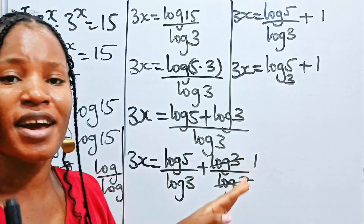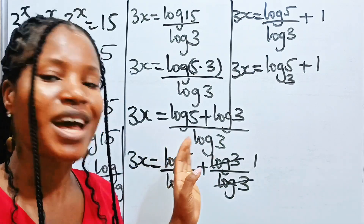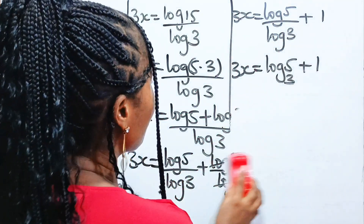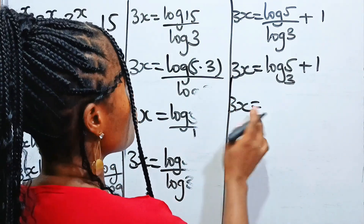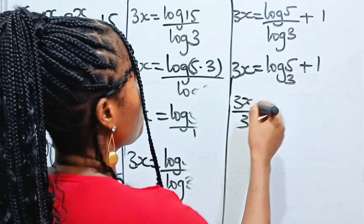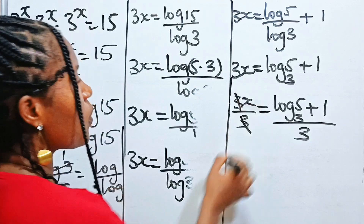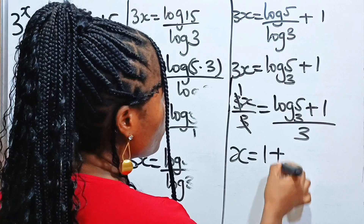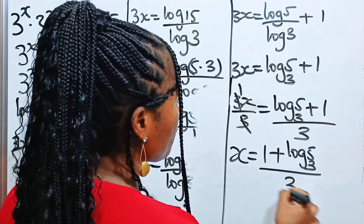We are not yet done — don't miss the verification part where we prove the answer is correct. So let's divide both sides by 3: 3x divided by 3 equals log 5 base 3 plus 1, all divided by 3. The 3s cancel to give 1, and 1 times x is x. So x is equal to 1 plus log 5 base 3, everything divided by 3.